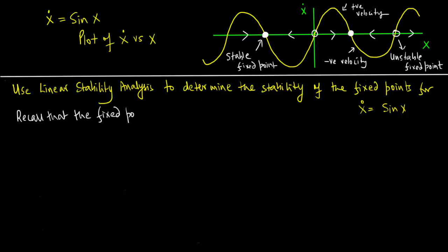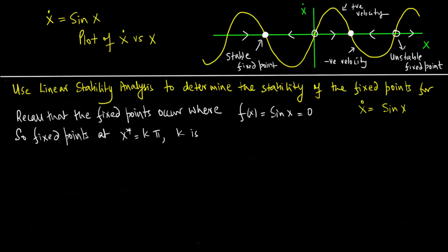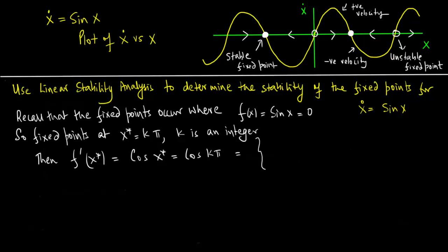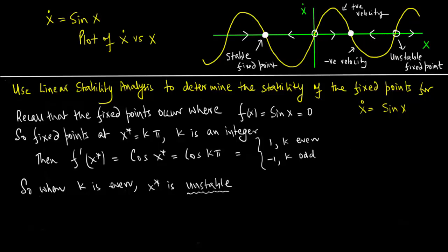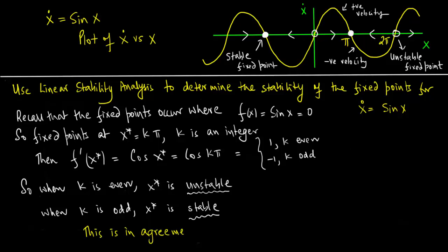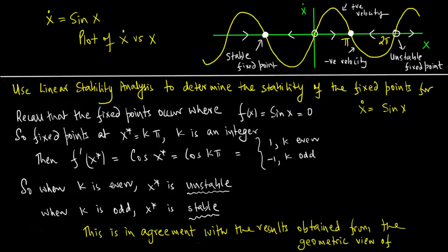The fixed points occur where f(x) = sin(x) = 0, so the fixed points are at x* = kπ, where k is an integer. Then f′(x*) = cos(x*) = cos(kπ), which equals 1 if k is even and −1 if k is odd. So when k is even x* is unstable, and when k is odd x* is stable. This is in complete agreement with the results obtained from the geometric view.